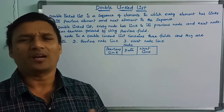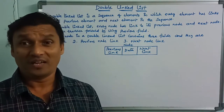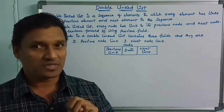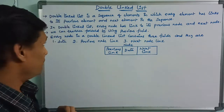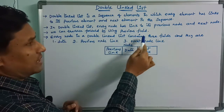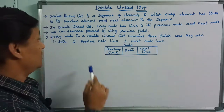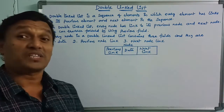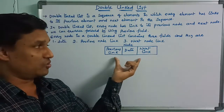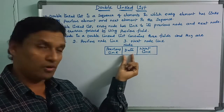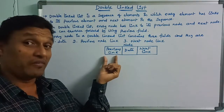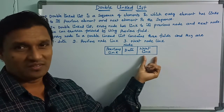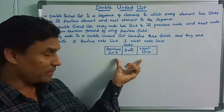In double linked list, every node contains three fields. The first one is the data part. The second one is the previous node link. The third one is the next node link. This is the node structure — in the middle there is data, then you have the previous node link, then you have the next node link.